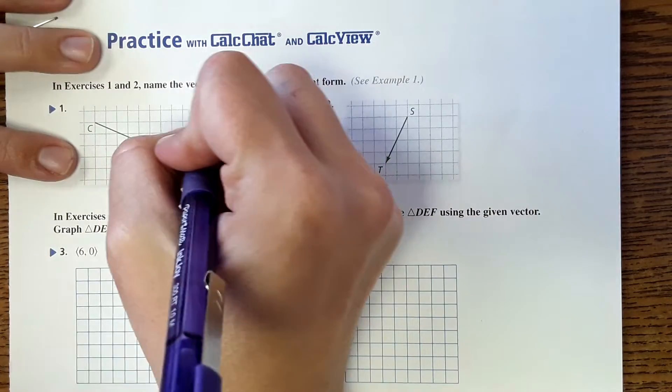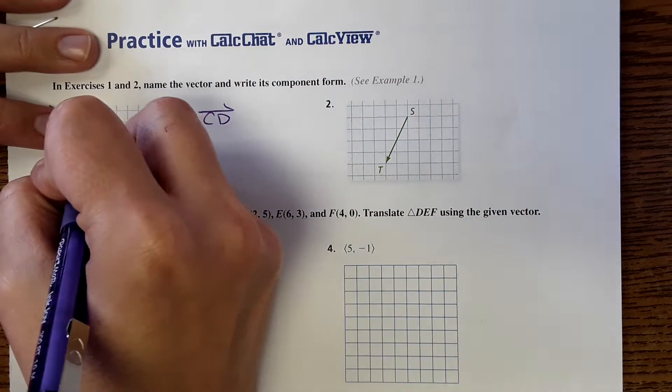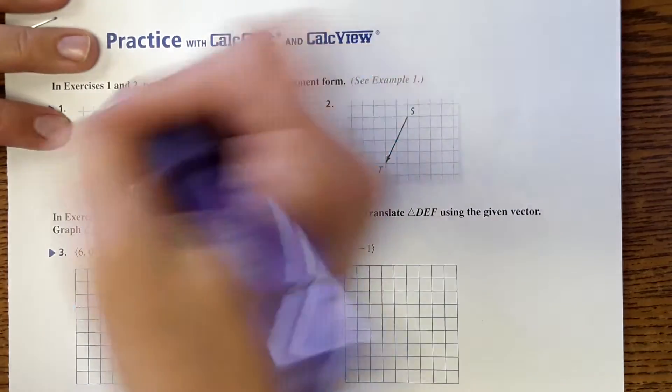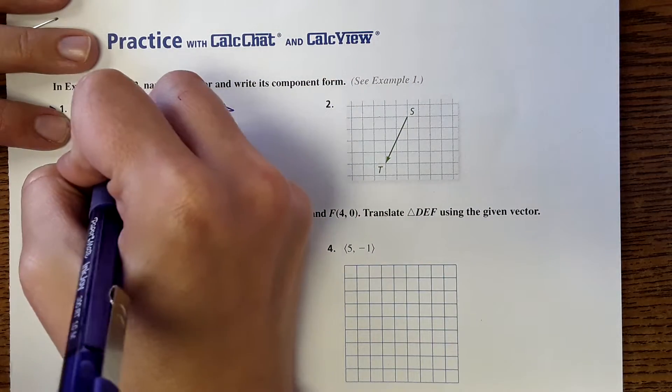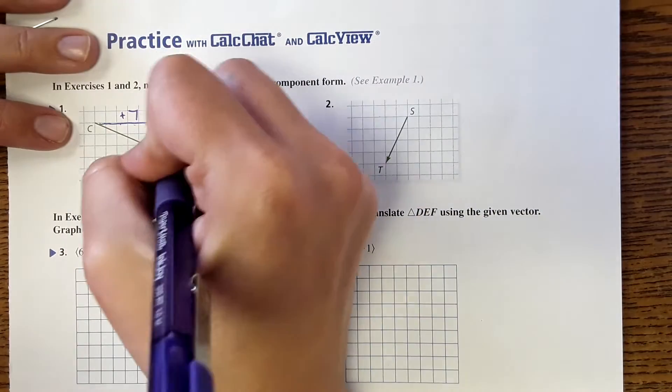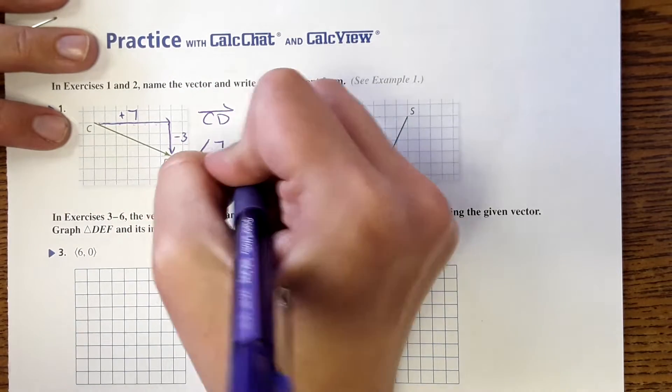So the vector here is vector CD, and then component form is just talking about the direction. So we do the horizontal change and then vertical change. From 1 through 7 units this way, so that would be plus 7 to the right, and down 3, so that's minus 3. So that would be 7, negative 3.